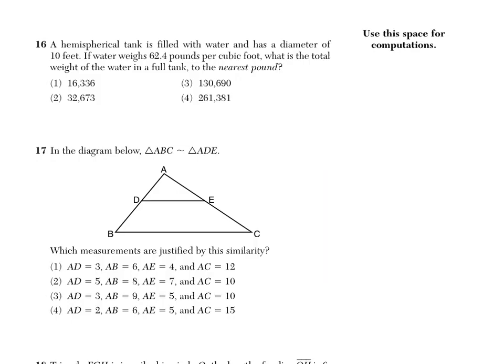Number 16 says that a hemispherical tank — notice this says hemispherical, that's a half sphere — is filled with water. Being filled means we're talking about volume. It has a diameter of 10 feet, so D equals 10. If the water weighs 62.4 pounds per cubic foot, what is the total weight of the water in a full tank to the nearest pound?